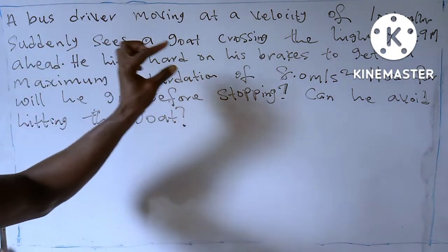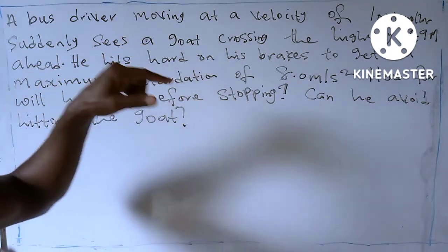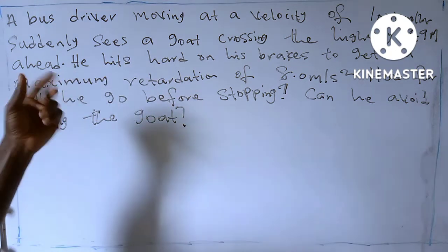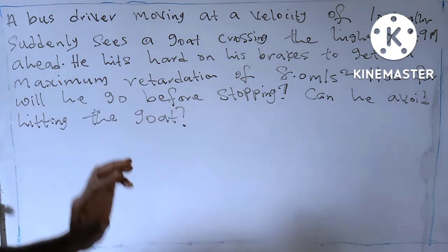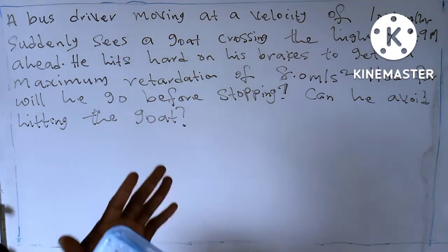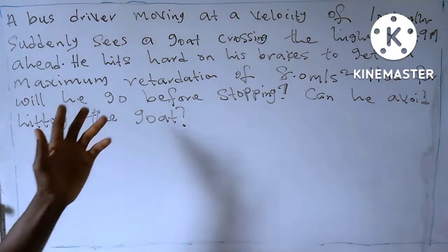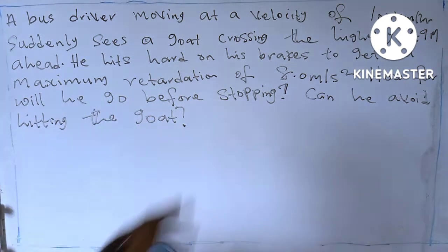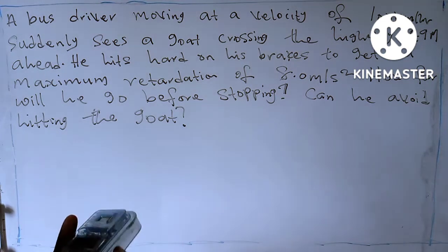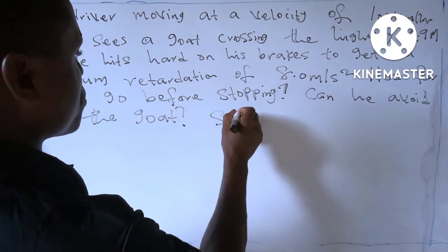A bus driver moving at a velocity of 100 kilometers per hour suddenly sees a goat crossing the highway 49 meters ahead. He hits hard on his brakes to get a maximum retardation of 8.0 meters per second squared. How far will he go before stopping? Can he avoid hitting the goat? Let's look at the solution.